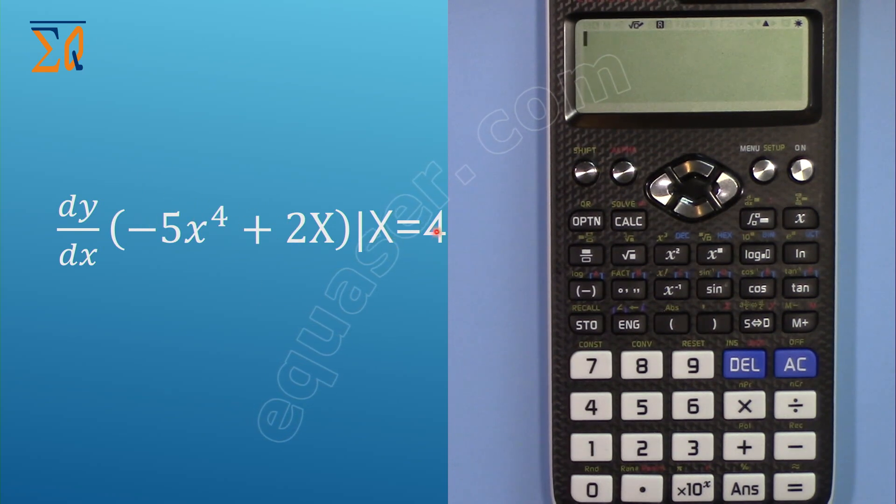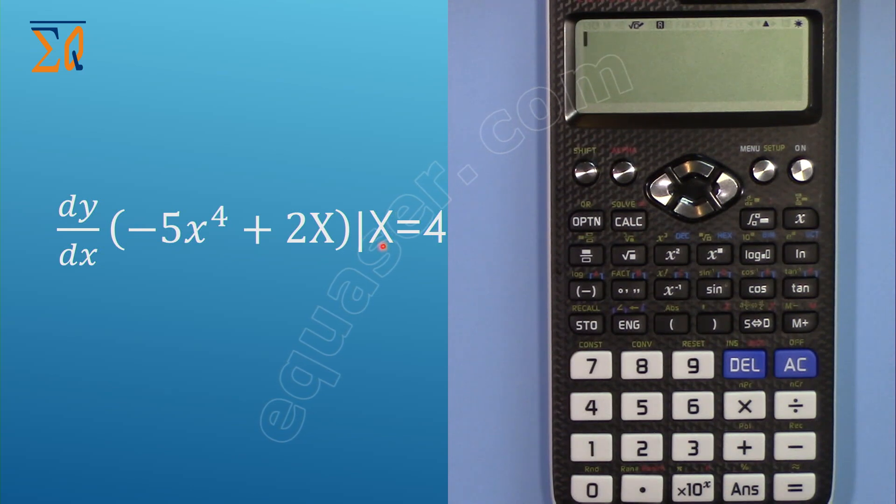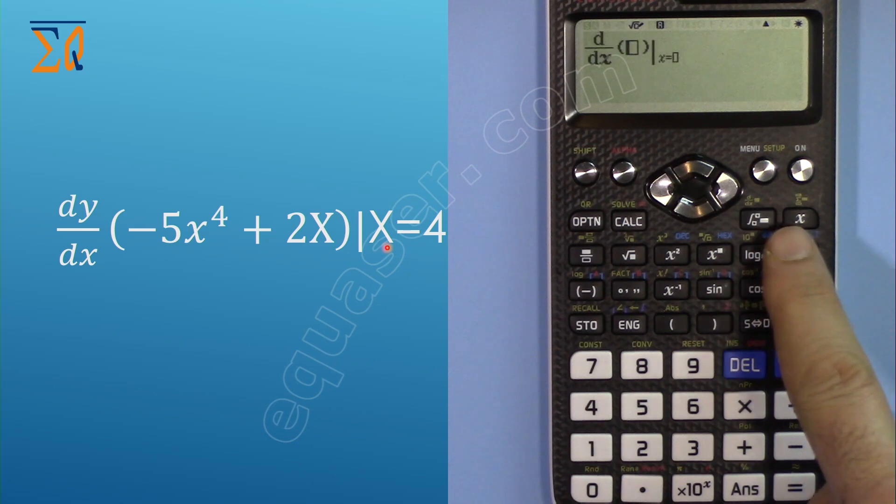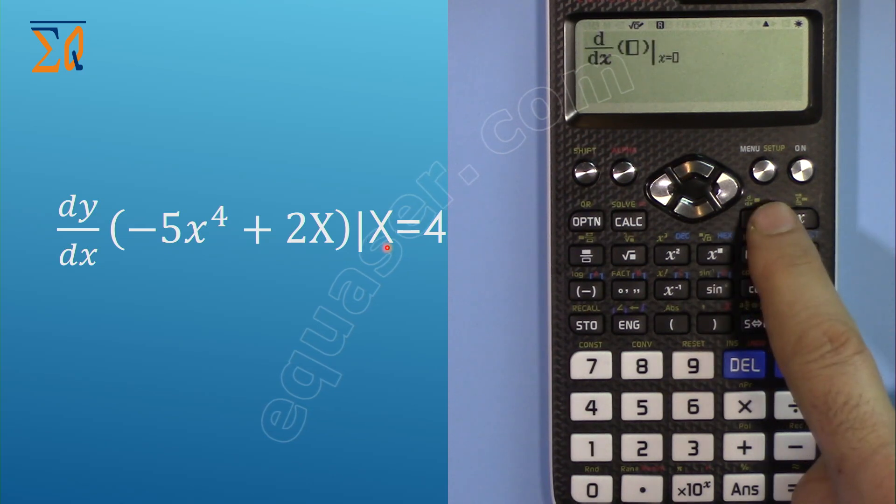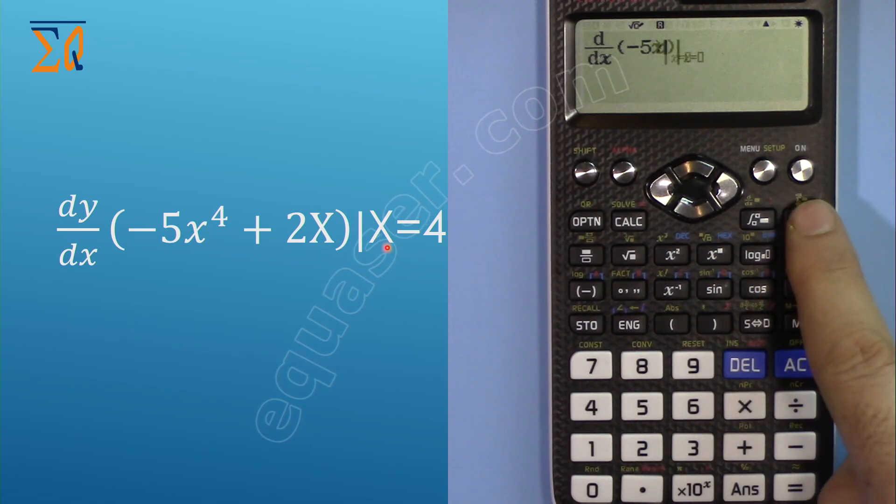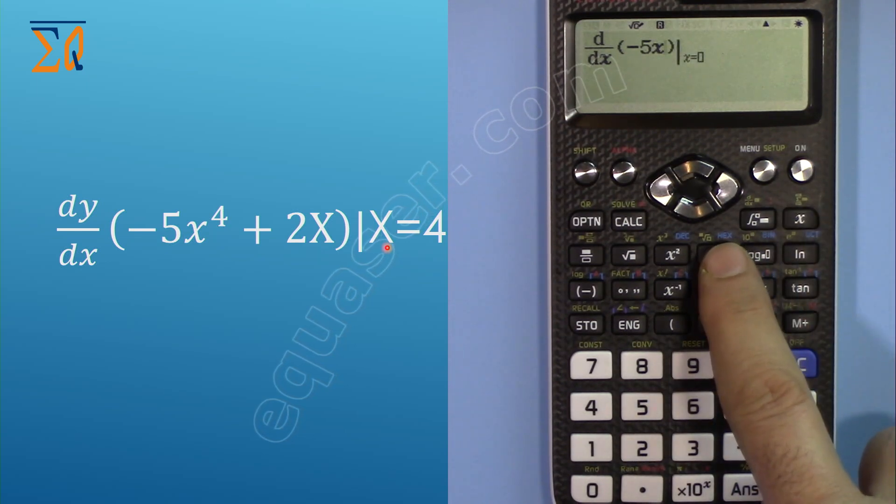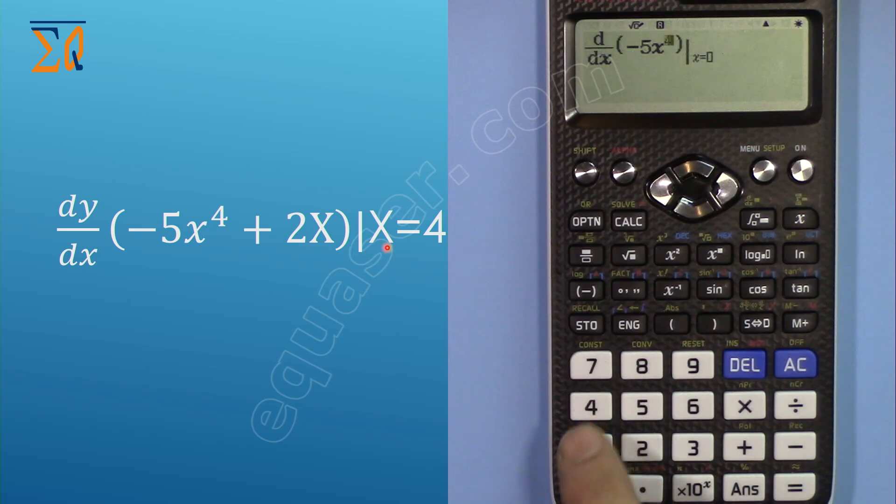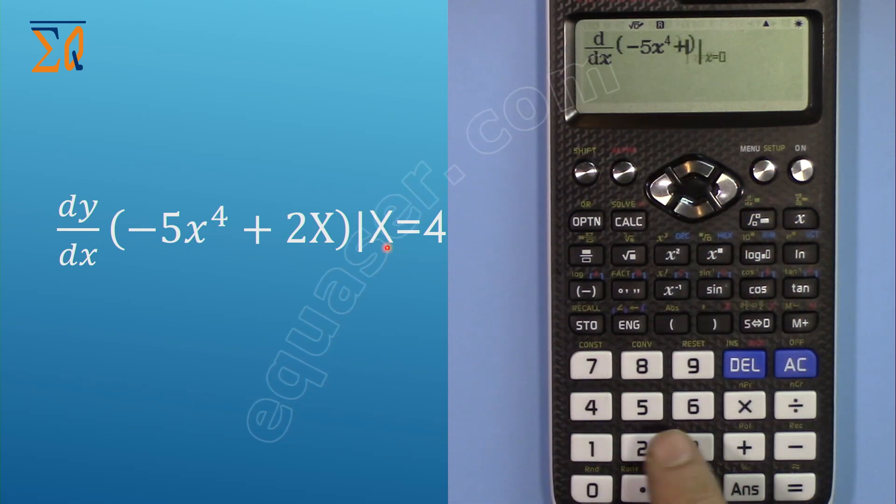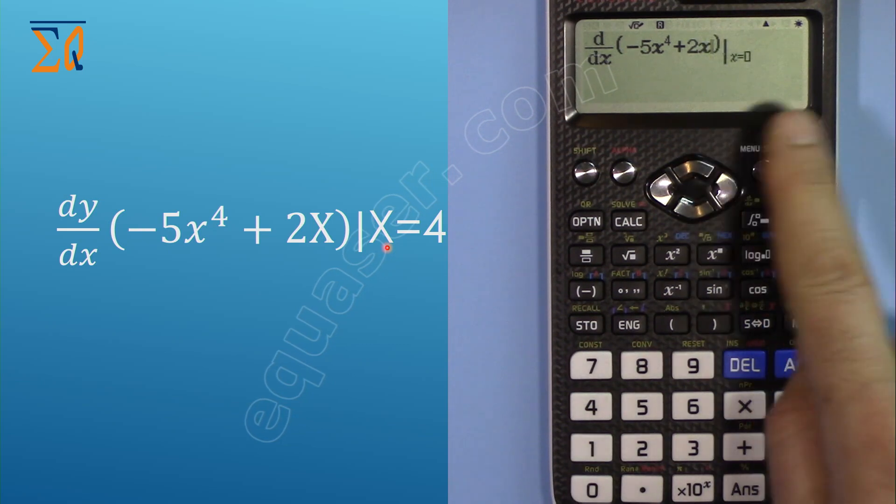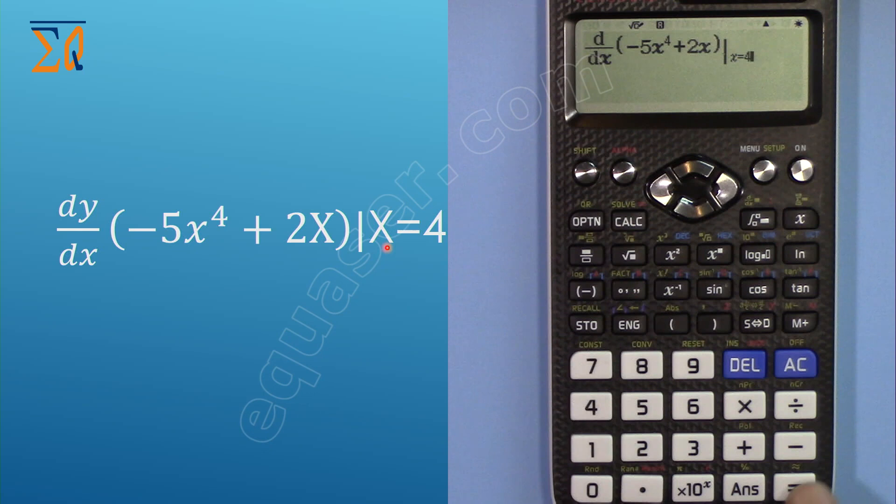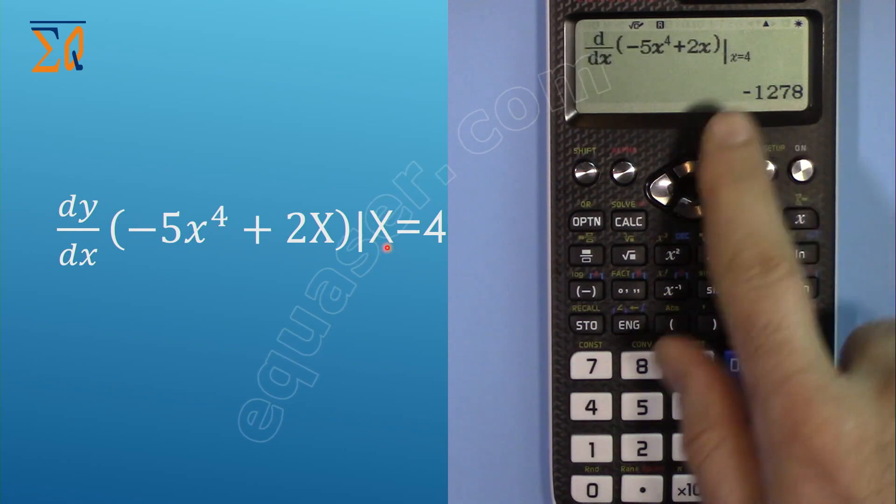Press Shift and the integral button becomes derivative. Enter -5, then X, then to the power 4. Move with the right arrow, then plus 2 and X. Now with arrows go to this side and enter 4.